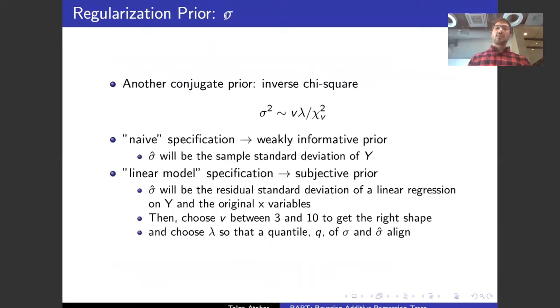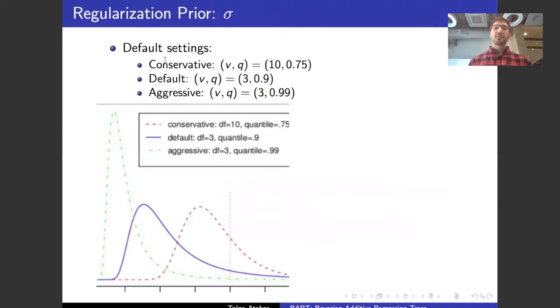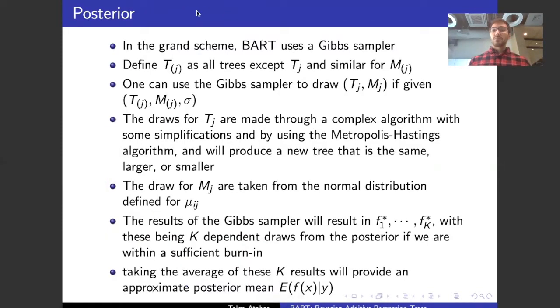The prior for sigma uses another conjugate prior, but this is one that we did not cover in class. It's an inverse chi squared. There are two ways to do this. You can either have a weakly informative prior where you simply use the prior as being the sample standard deviation in the data, or we could run a linear regression on the data and take the deviation of its residuals. This is a more subjective approach. It's the one that's recommended. It's analogous to the subjective priors that we went over in class. And you can choose different V or Q values. They have three recommendations: conservative, default, and aggressive. Default usually covers a lot of different applications. Conservative and aggressive are more used if you know that you have data on certain extremes of the distribution.